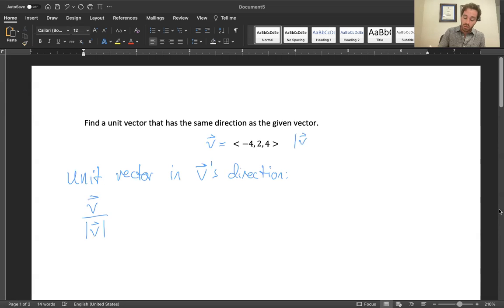What is the magnitude of this? It's the square root of negative 4 squared plus 2 squared plus another 4 squared. Negative 4 squared is 16, that's 4 and another 16. 16 and 4 is 20, 16 more is 36. I just love it when square roots end up being nice numbers. So this is divided by 6.